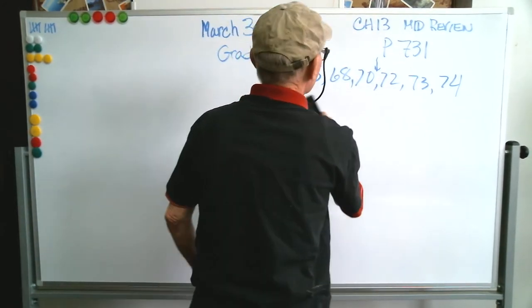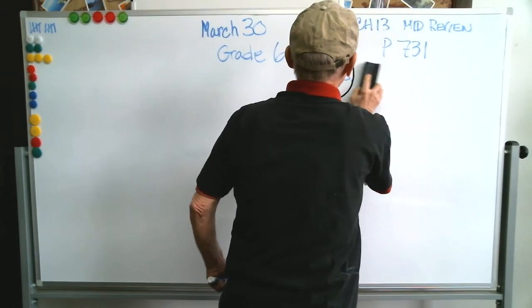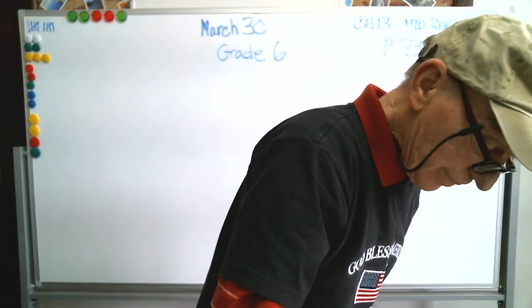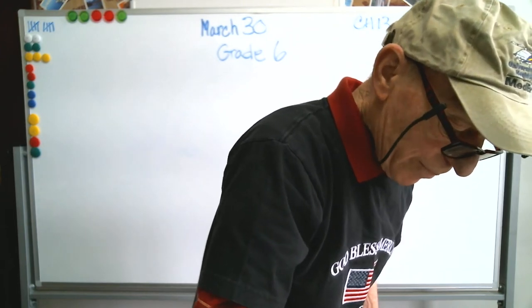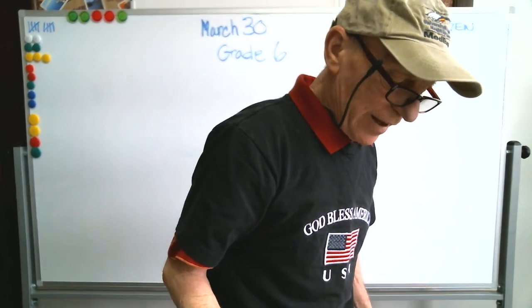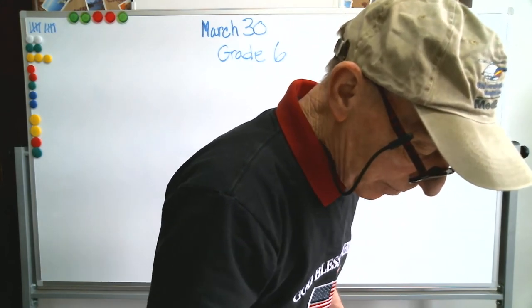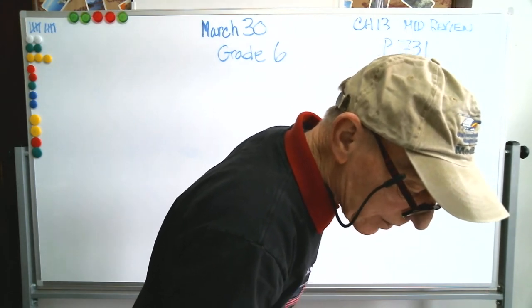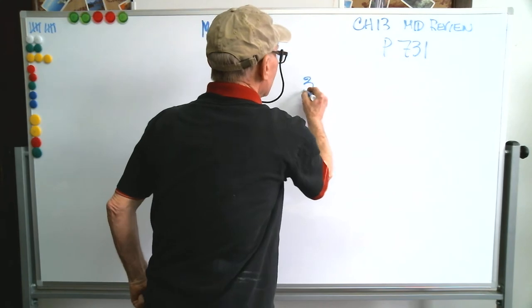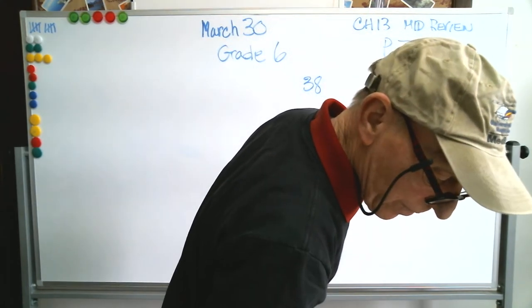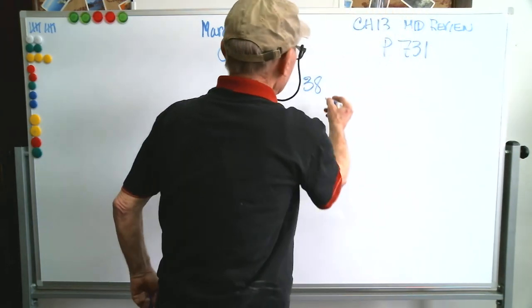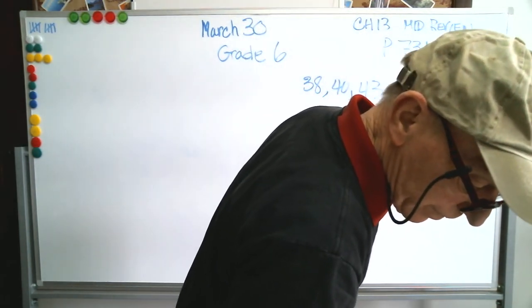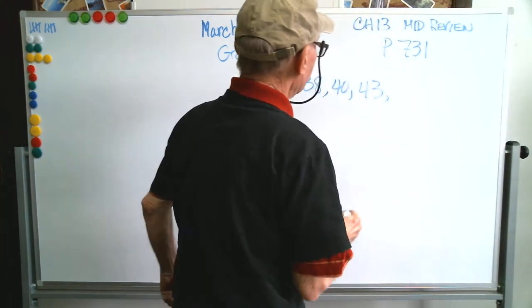You can always go back and look at the video or review in your book. The next three problems are dealing with finding the mean absolute deviation of a data set. So let's just pick number 6 there. We've got five numbers, and the lowest is 38. Then it goes 40, 43, 46, and 48.